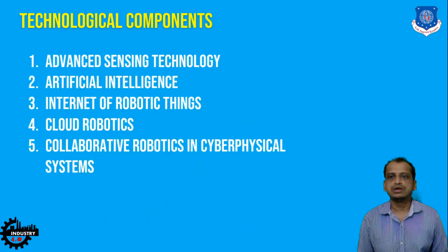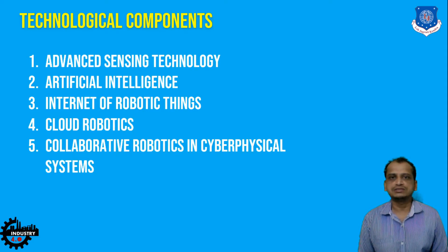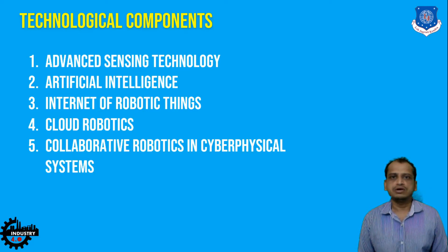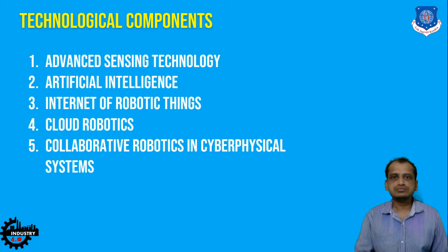We already discussed the technological components of advanced robotics, starting with artificial intelligence and advanced sensing technologies. We covered those two topics in previous sessions. Now in this session we will focus on Internet of Robotic Things, cloud robotics, collaborative robotics, as well as the cyber physical system architecture.